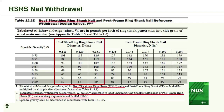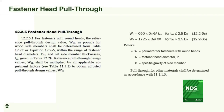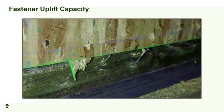New fastener head pull-through provisions were added to the NDS. Analysis found that head pull-through is related to the perimeter of the fastener head; new equations based on fastener head diameter, specific gravity, and net side member thickness were added. Head pull-through is shown in testing from a shear wall test where nail heads pulled through the sheathing — you can see nails still attached to the bottom plate but with the head pulled through the sheathing. This is why head diameter is so critical to specify.